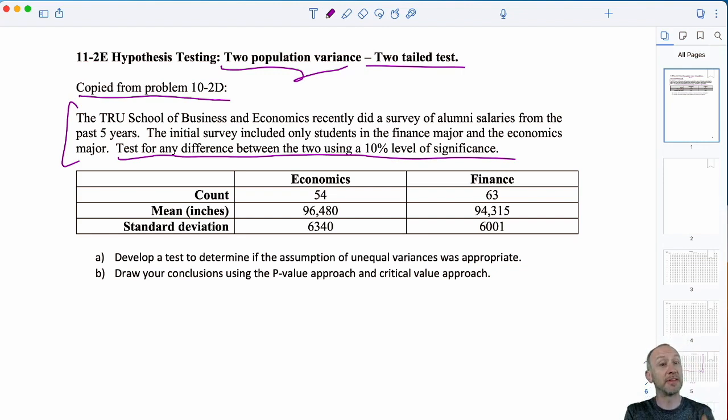We either assume the variance is equal, or we assume the variances are not equal, and that influences our calculation for the standard error, that influences our calculation for degrees of freedom. So here, we are to determine if the assumption of unequal variances was appropriate. So this is telling us how we're going to formulate our test. We assumed unequal variance, so let's go ahead and test to see if they're different or not.